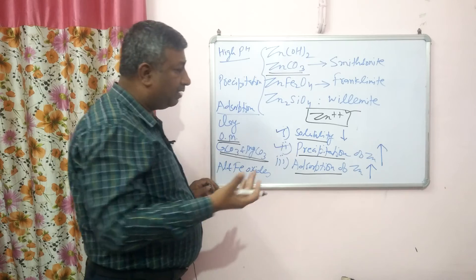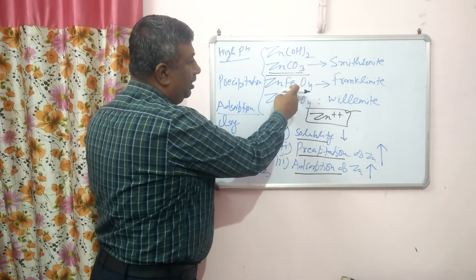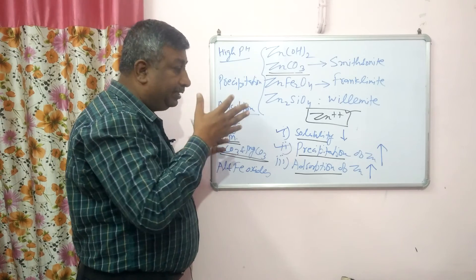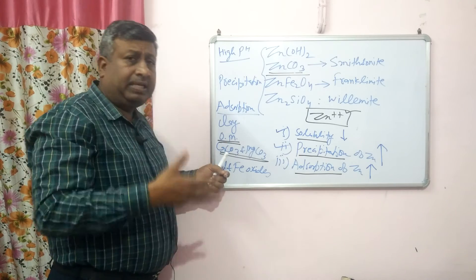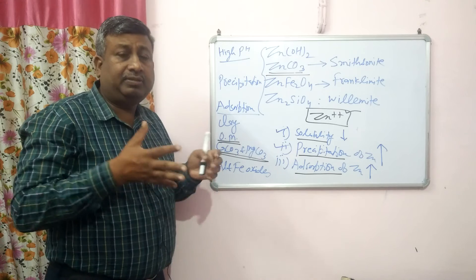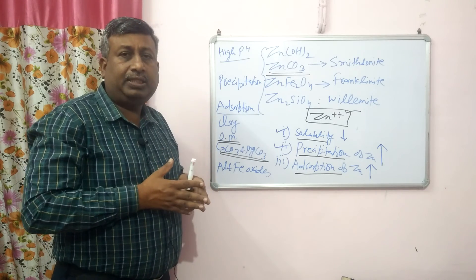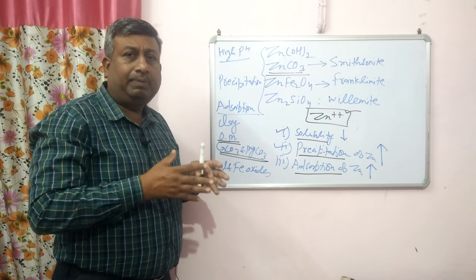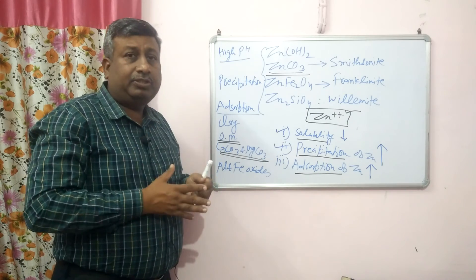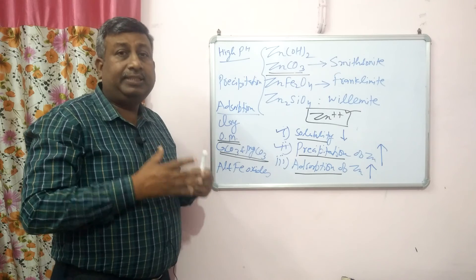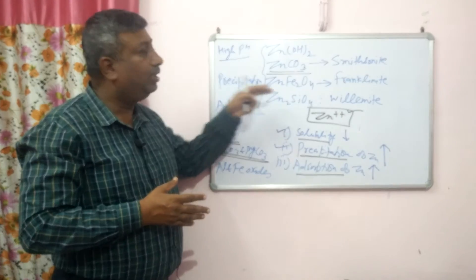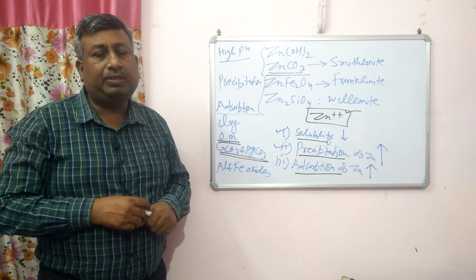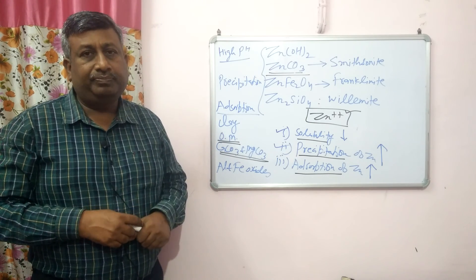Solubility is reduced because hydroxides are formed — precipitated hydroxide, carbonate, iron oxide, and silicon oxide forms are present, making zinc unavailable. Adsorption on clay, organic matter, calcium carbonate, and oxides also reduces availability. Zinc is available under acidic conditions, particularly when pH is less than 7.7. In calcareous soil, zinc availability is reduced due to formation of insoluble zinc carbonate and adsorption on calcium and magnesium carbonate. This is the effect of soil pH on zinc availability. Thank you very much.